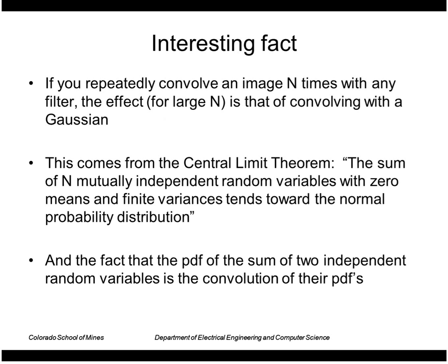Another interesting thing: if you repeatedly convolve an image with any filter, the effect is that of convolving with a Gaussian. This comes from the Central Limit Theorem, which says the sum of N mutually independent random variables with zero means and finite variances tends toward the normal probability distribution. Also, the PDF of the sum of two independent random variables is the convolution of their PDFs.